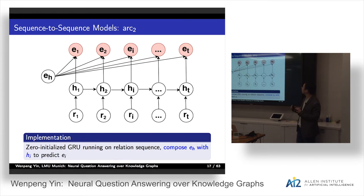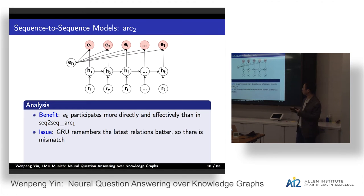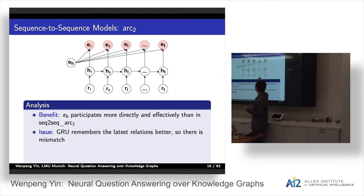It has the benefit that it encodes the entity sequence and the relation sequence in a single prediction chain, so it's very simple. But the issue is the head entity cannot give effective guidance when the path is too long. That's why we change the model slightly to zero-initialize the GRU hidden state, but then run it on the relation sequence, composing the head entity EH with the current hidden state HI to predict the entity EI. But another problem is that a GRU remembers the latest input better than the old input, so there may be a mismatch between the head entity and the hidden state HT.